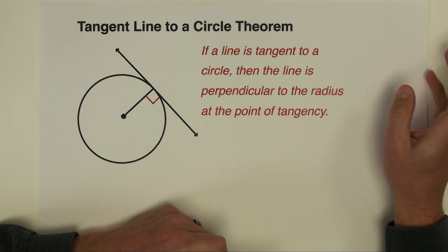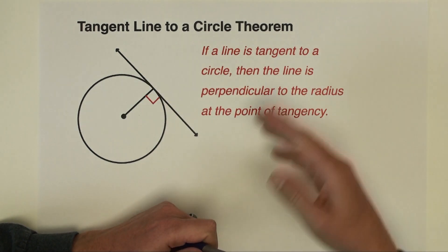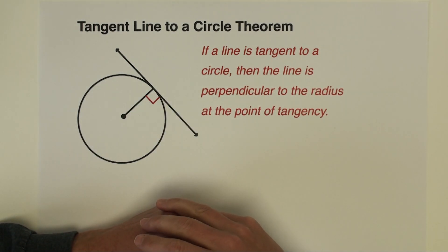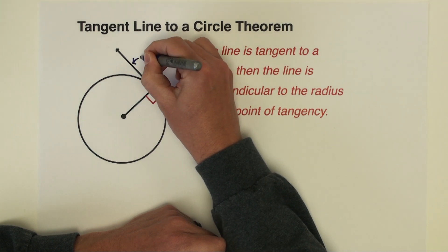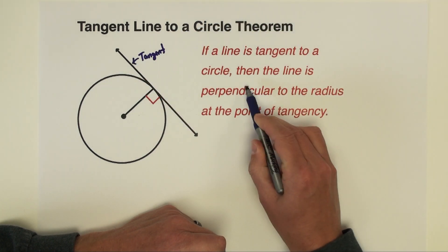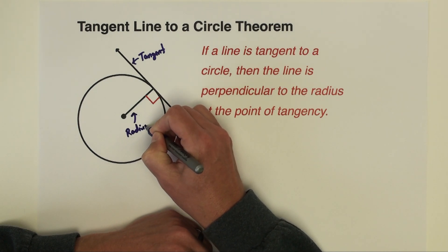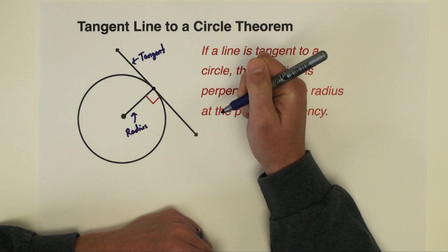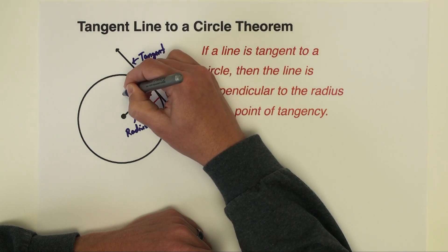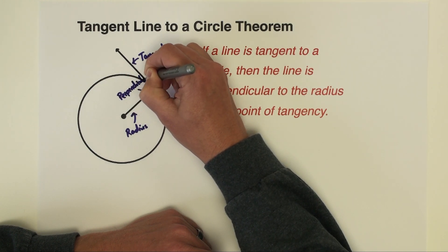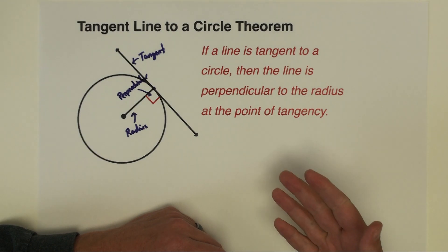Next we're going to go over a couple of theorems that help us relate these different lines and segments of circles. The first one is called the tangent line to a circle theorem. It states: if a line is tangent to the circle, then that line is perpendicular to the radius at the point of tangency. So right here we have our tangent line and our radius, and where they meet at the point of tangency, notice we have a right angle — so it is perpendicular.